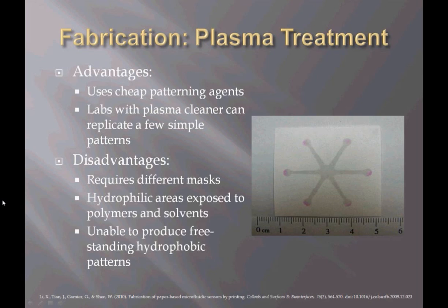The first fabrication method is plasma treatment. It's a two-step fabrication process where the entire fiber surface is chemically modified, with the patterning agent reacting with the hydroxyl groups of the cellulose to make it hydrophobic. The second step is to selectively de-hydrophobize for the channels. Advantages include cheap patterning agents — AKD, or alkyl-ketene dimer, is one — and labs with plasma cleaners can replicate patterns. Disadvantages include requiring different masks, hydrophilic areas exposed to polymers and solvents, and an inability to produce free-standing hydrophobic patterns.